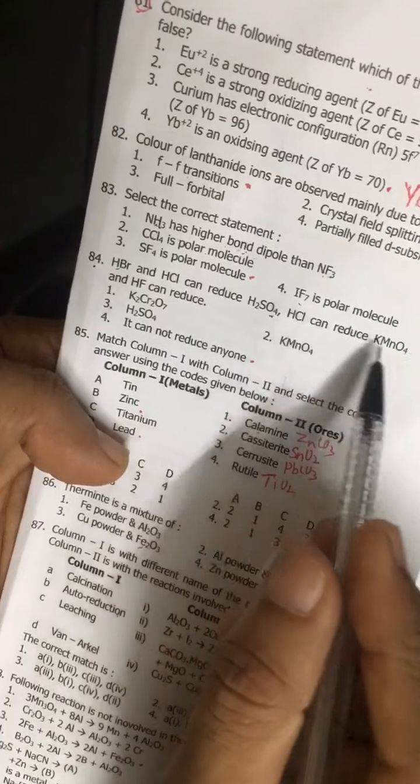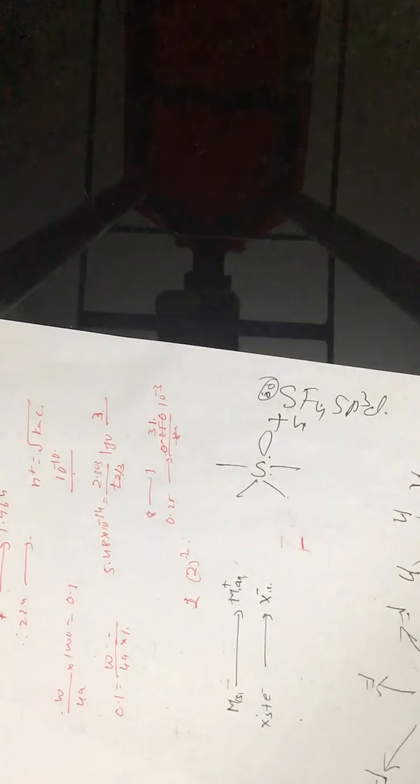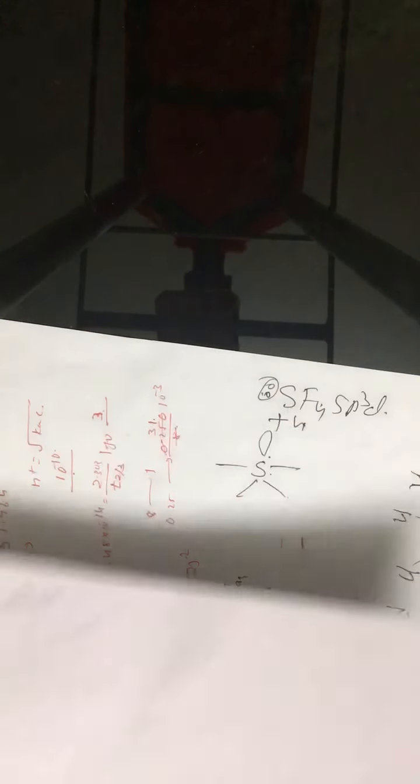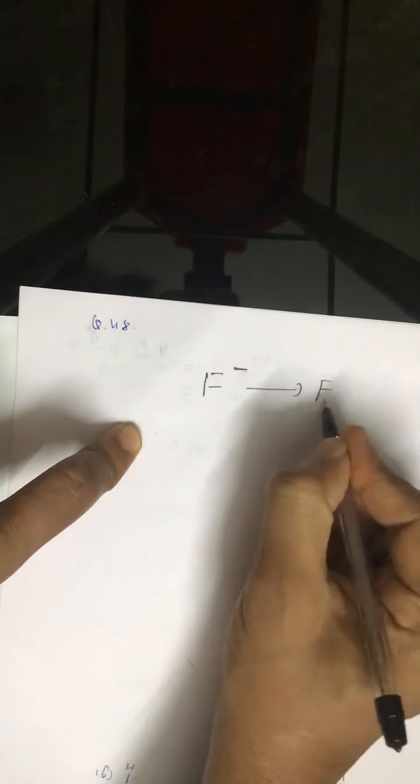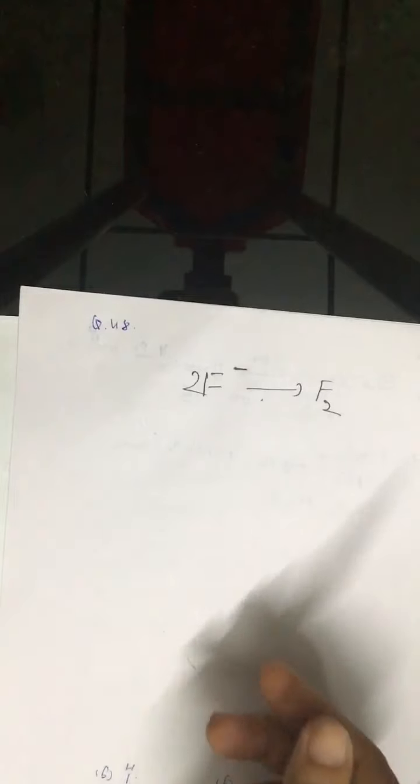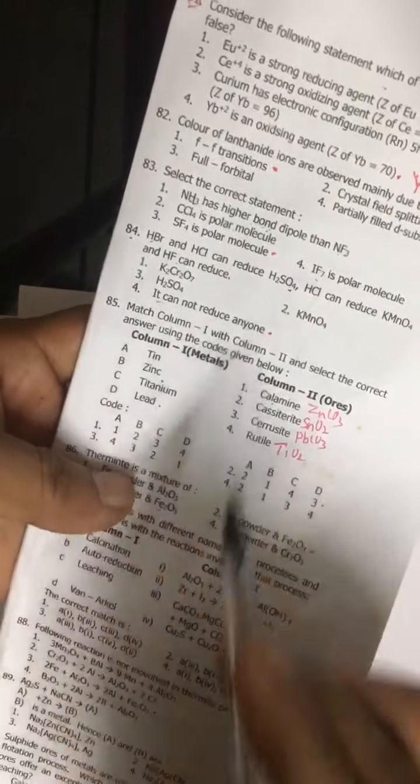Question number 84: HBr can, HCl can reduce H2SO4, HCl can reduce KMnO4, HF can reduce none. It is like, the point is very simple: fluorine is the strongest oxidizing agent. Fluorine is the strongest oxidizing agent, so correct answer is both option.